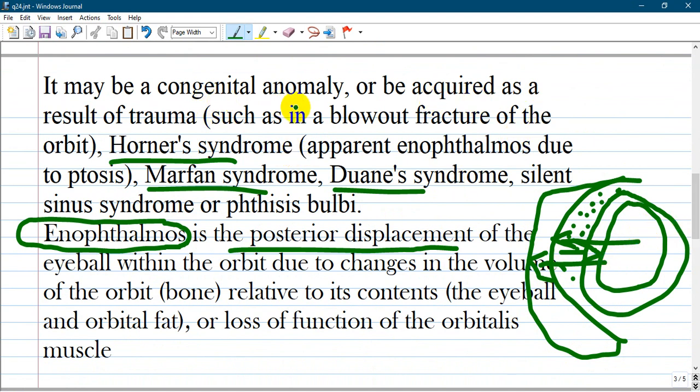Congenital anomalies that result in enophthalmos are Horner syndrome, Marfan, Duane's syndrome, and Silent Sinus syndrome.